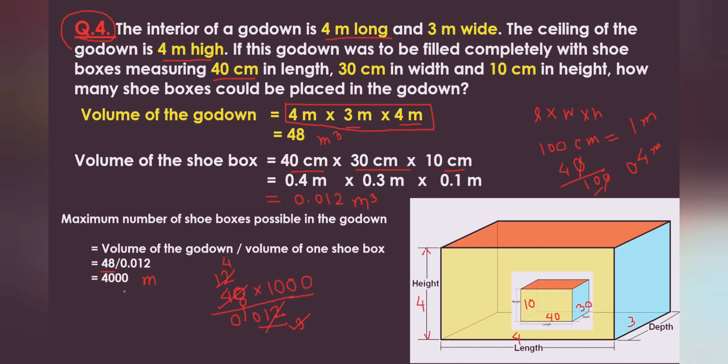We got the answer — the maximum number of shoe boxes that can fit in the godown is 4,000 shoe boxes. I hope that's all for today. Thank you for watching, and see you soon with another new video. Keep watching and keep practicing. Thank you very much.